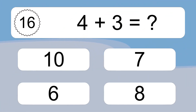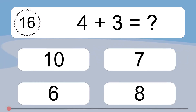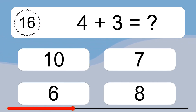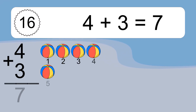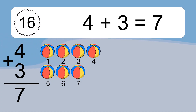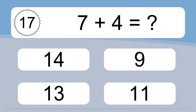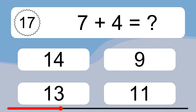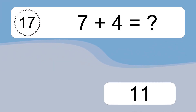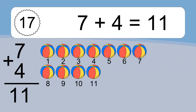4 plus 3 equals what? 7 plus 4 equals 7. Let's count it: 1, 2, 3, 4, 5, 6, 7. 7 plus 4 equals 11. Let's count it: 1, 2, 3, 4, 5, 6, 7, 8, 9, 10, 11.